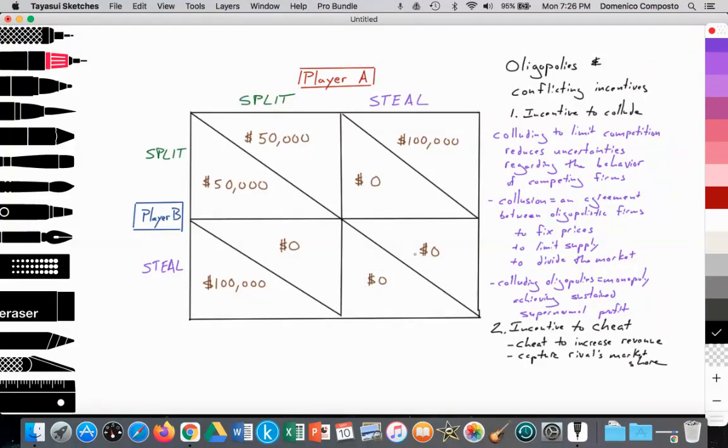So it's a slightly high-stakes game. Now, the incentive, the rational choice, the best choice, is for the two players to collude. And so we get into this idea of oligopolies and this conflicting incentive that they're facing.